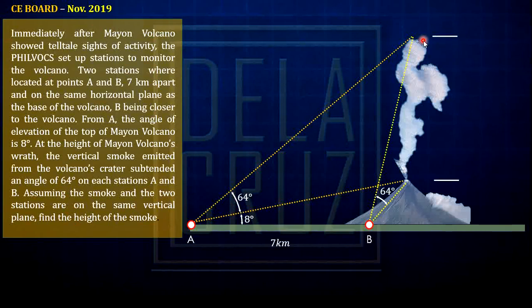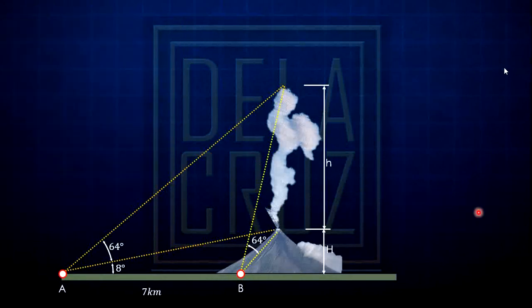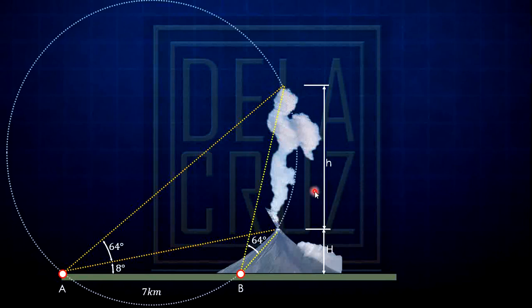Let's assume that this height of the smoke is variable h, and I will assume that the height of the mountain is capital H. How will we start? Is this even possible that 64 degrees is the subtended angle here and this is also 64 degrees? That is only possible if these points A, B, this point of the volcano, and the top of the smoke are on the periphery of the circle.